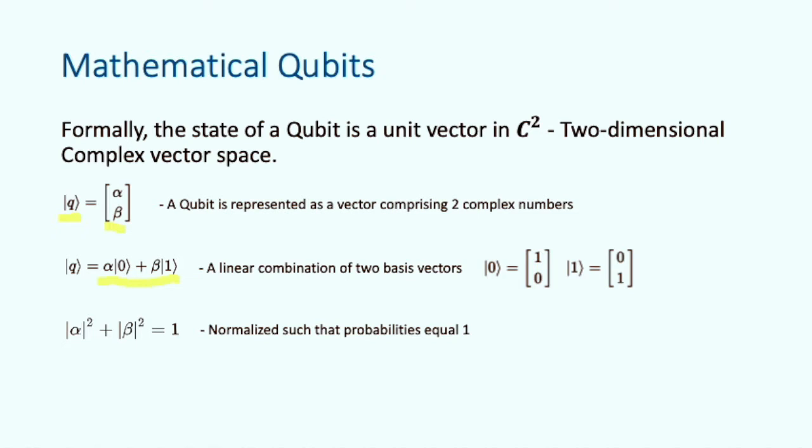This is important, for when we measure this qubit, the probability amplitude will determine the most likely basis state that the measurement will reduce to. As probabilities have to sum up to one, our qubit is constrained by the following normalization equation. The absolute value of alpha squared plus the absolute value of beta squared sum to one.